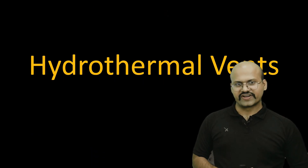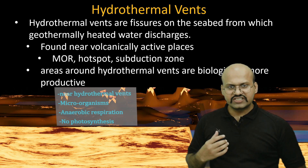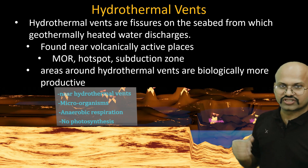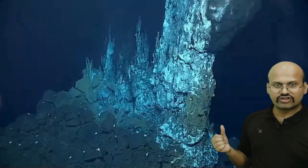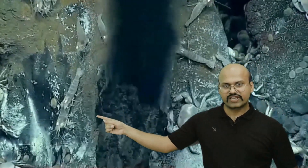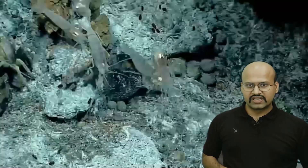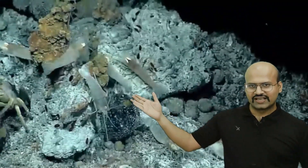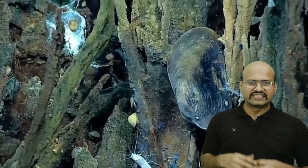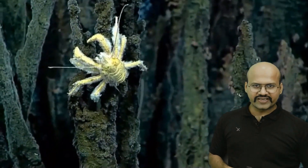Hydrothermal vents are features on the oceanic floor from which heated water or other materials are discharged. They are generally found in volcanic regions like mid-oceanic ridges, hot spots, or subduction zones. These regions are very biologically active — microorganisms live around hydrothermal vents, photosynthesis does not occur here, and we see anaerobic respiration instead. A NASA video shows material coming from the ocean floor in a region rich in biodiversity.